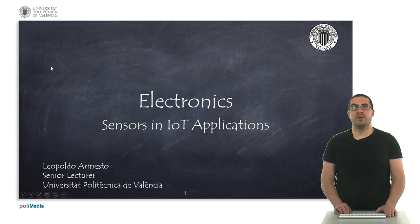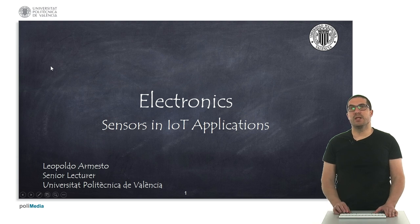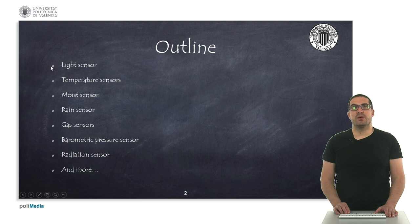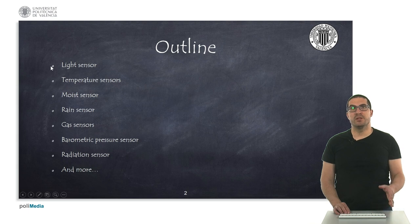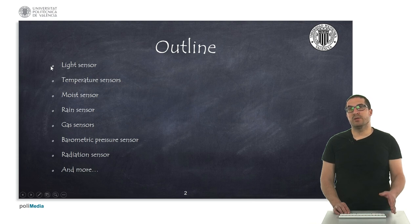Hello, my name is Leopold Armesto and in this presentation I'm going to explain about sensors that we typically use in IoT applications. This is the outline of our presentation: we're going to explain about light sensors, temperature sensors, moisture sensor, rain sensor, gas sensor, barometric pressure sensor, and finally the radiation sensor and many other alternatives too.